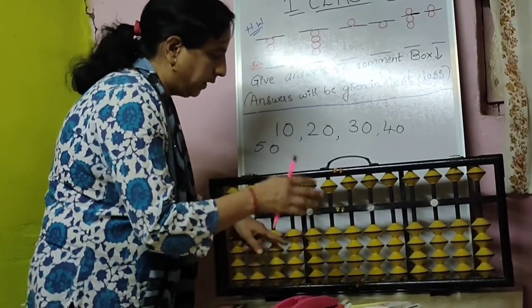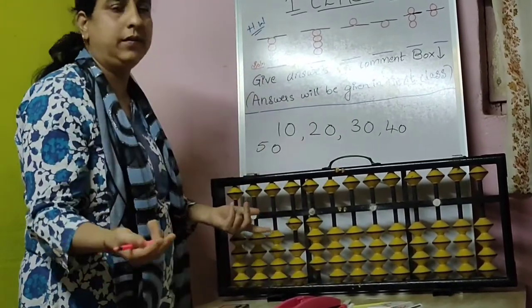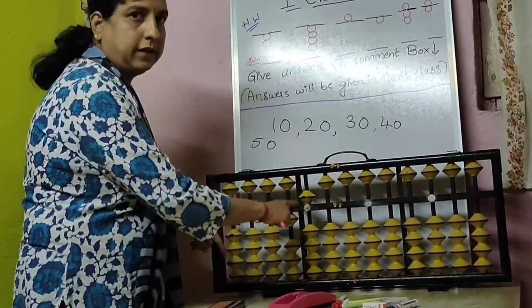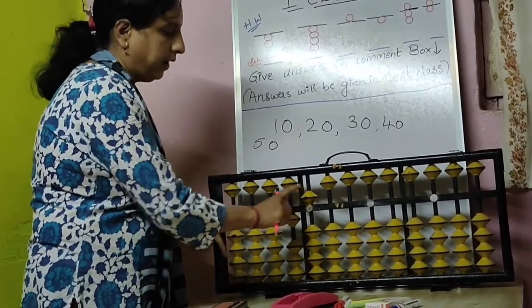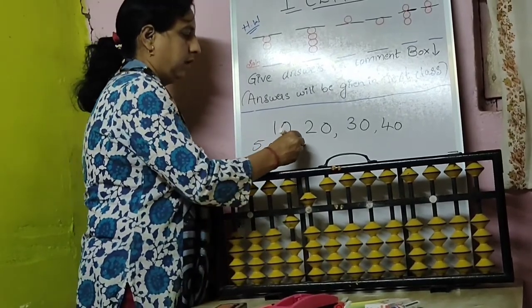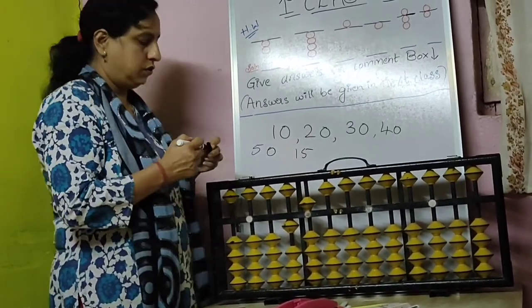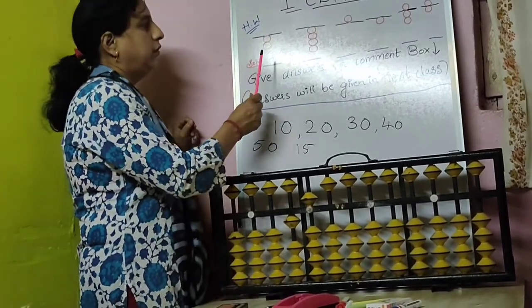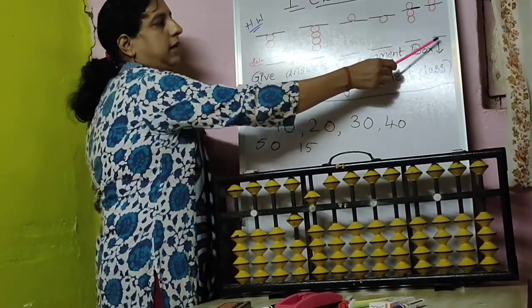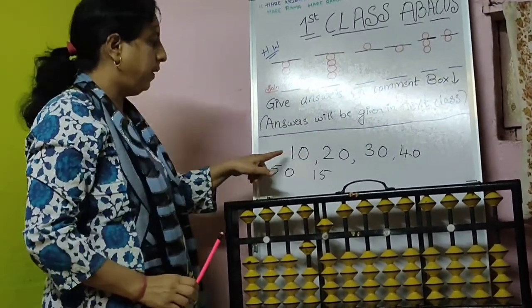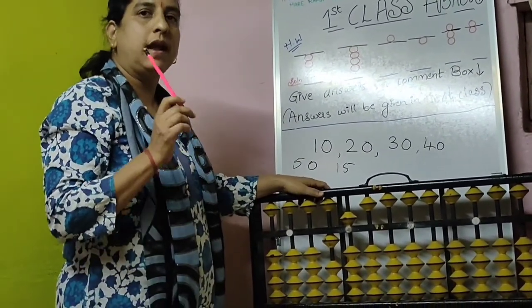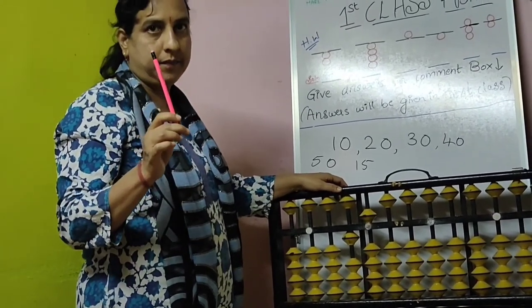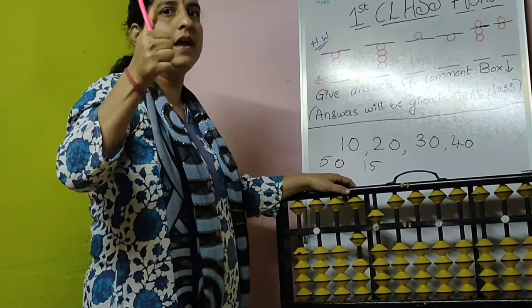So go on, practice like this: ten, four — fourteen; ten, five — fifteen, like this. Here one and here five. So what you do — next time you write down all these answers and come, write in comment box, and then practice like this. Go on, practice till ninety-nine and come back in the next class.